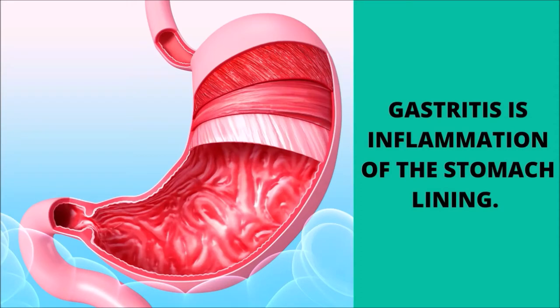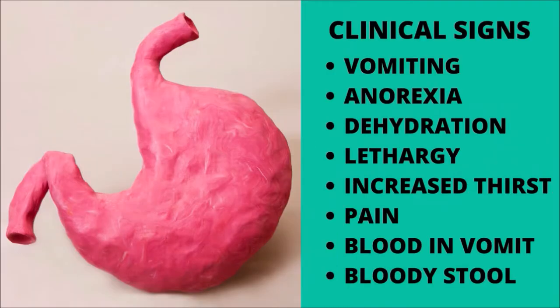Gastritis can be defined as an inflammation of the stomach lining. It may manifest as a brief incident, acute or a chronic condition, and more severe conditions may accompany it. The most frequently encountered clinical indications of gastritis include abrupt vomiting and decreased appetite, anorexia, dehydration, apathy or sadness, increased thirst, blood in the vomit or feces, and abdominal pain.